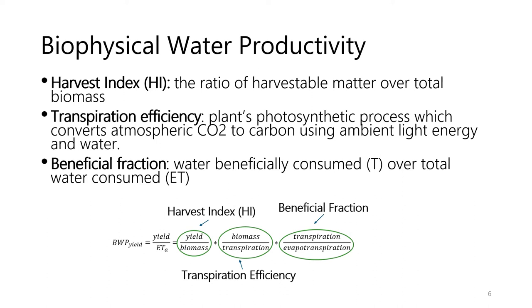It makes sense that the higher these ratios are, the higher the water productivity. But how can you increase these ratios? Is this so straightforward?